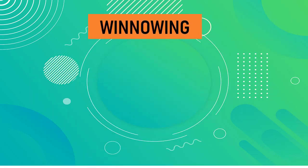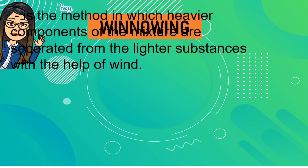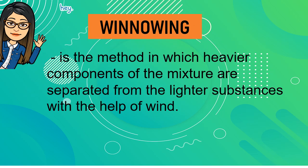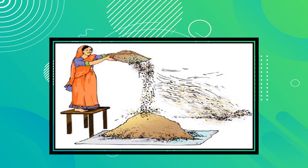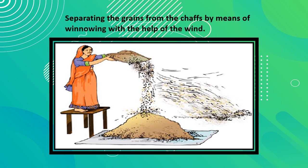Let us move on to winnowing. Winnowing is the method in which heavier components of the mixture are separated from the lighter substances with the help of wind. The illustration shows how winnowing is done — you can separate grains from the chaff by means of winnowing. Chaff is lighter than the grains, which is why the wind blows it away.